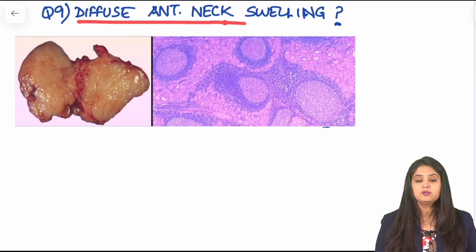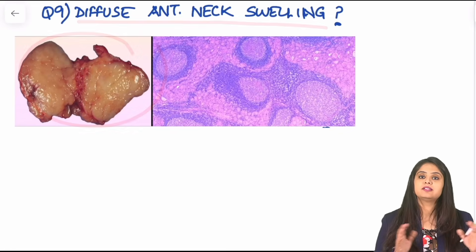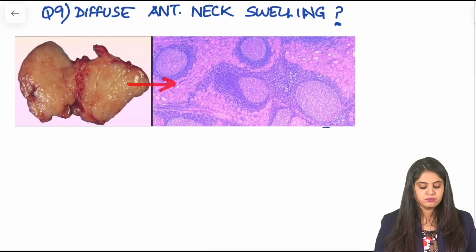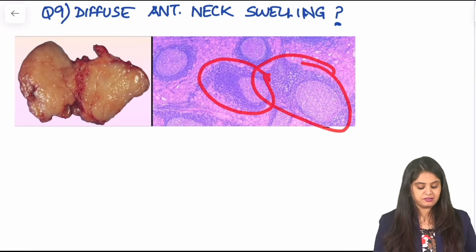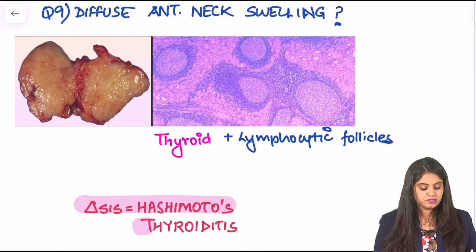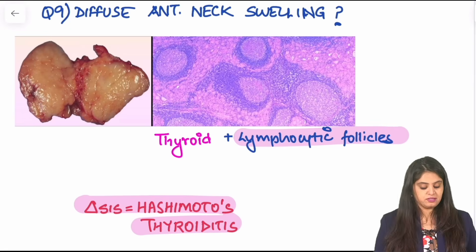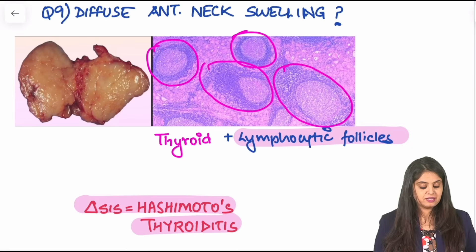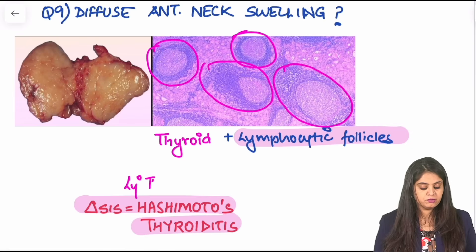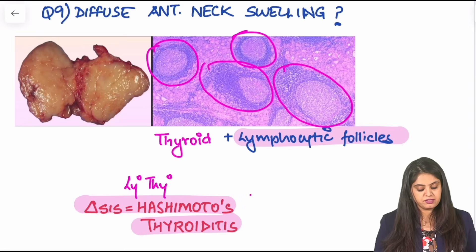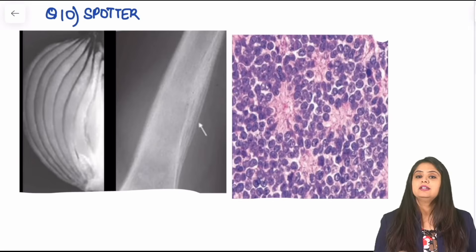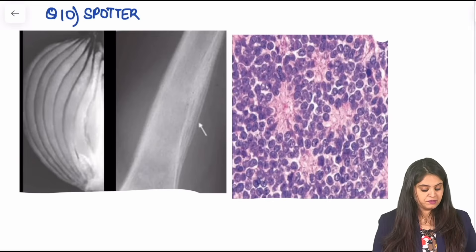Now that you've done normal thyroid, look at a diseased version. There is a diffuse anterior neck swelling — the entire thyroid is enlarged, not just one nodule. In the next photo, rather than the normal pink thyroid, you can see a lot of blue-colored lymphocytes. That makes it classical lymphocytic or Hashimoto's thyroiditis. There is so much lymphocytic infiltrate that it looks like a lymph node — that is why it is also called lymphocytic thyroiditis, and clinically the patient will have hypothyroidism.